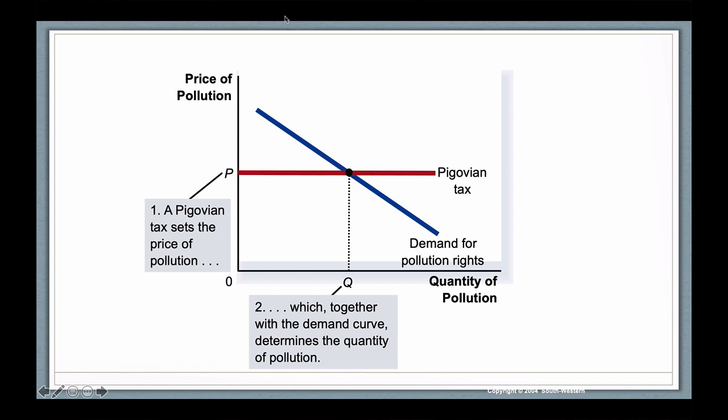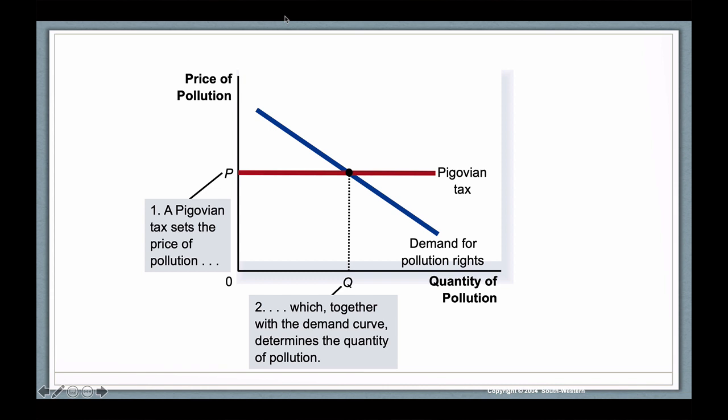How is that equivalent to cap and trade? Well, let's do the same thing for cap and trade. Here we have the same figure and the same downward sloping curve. Companies will pollute less if it's more expensive to pollute, if the price of pollution is higher.